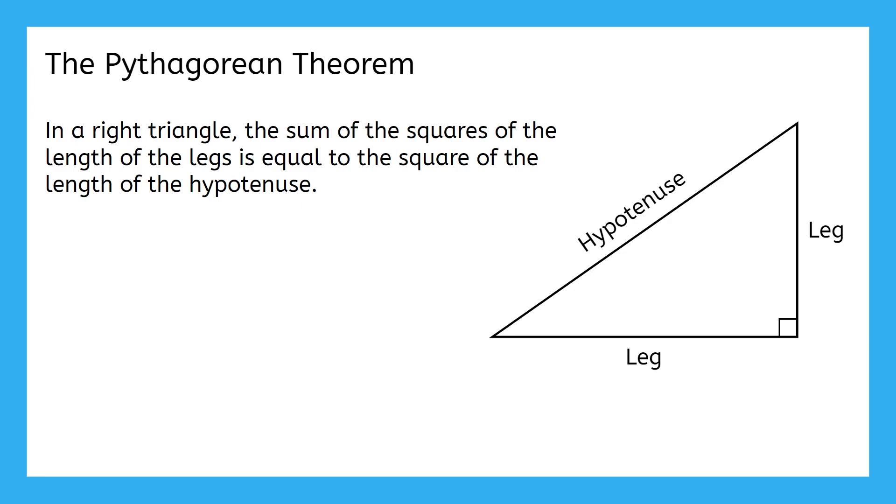That may seem a little confusing, but let me explain what that means. We label the legs with a and b, and the hypotenuse with c. It's very important to make sure that c always represents the hypotenuse, but a and b could switch places and it wouldn't really matter.